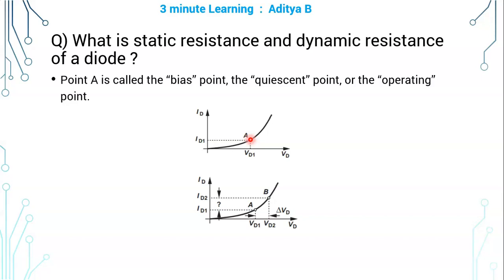Instead of finding the slope at one particular point, that is you are drawing a tangent at this point A and finding the slope of that tangent, that is what is called static resistance.